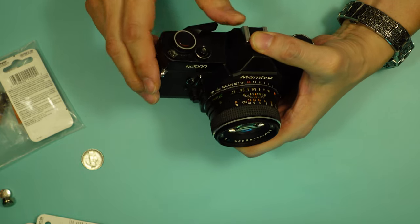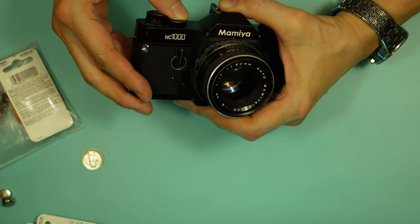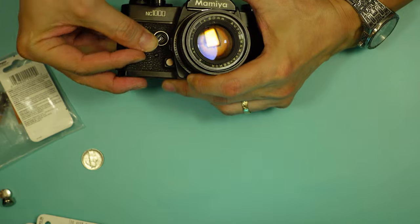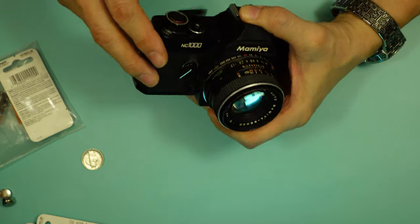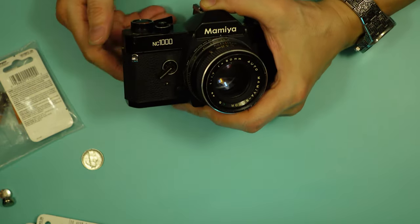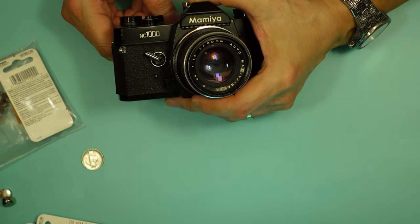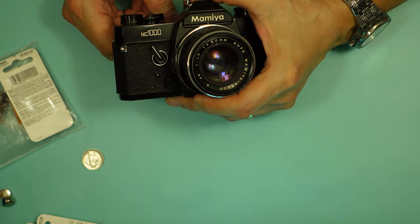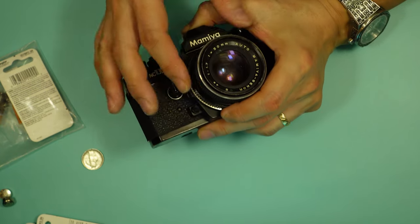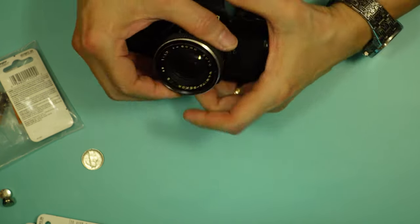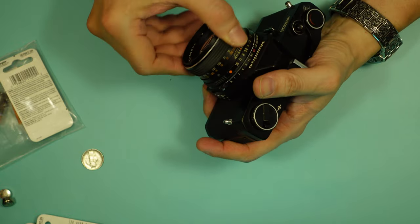Single throw film advance. That is a manual self timer. Yep. Lens is a 1.7, 50mm. Pretty standard for that time.